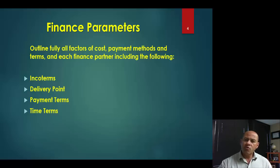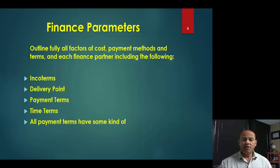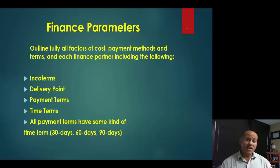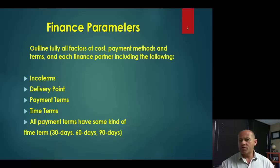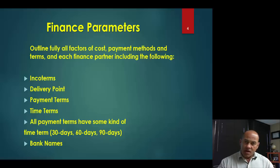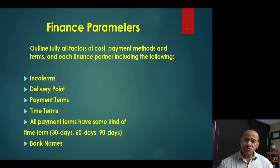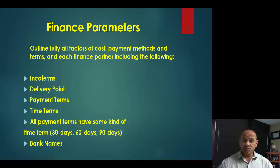Time terms are very important in establishing finance parameters. All methods of payment involve some kind of timing — this can be 30 days, 60 days, 90 days. How much time is the seller giving the buyer to pay? What are the bank names? To be effective in an international transaction, we have to establish who the banks are involved — the buyer's bank and the seller's bank. The transaction can have a lot of problems if those banks don't have corresponding relationships with each other.